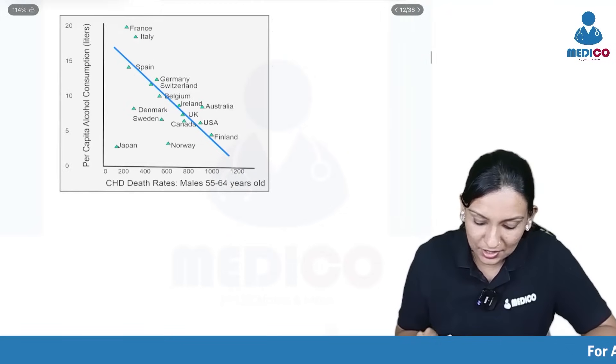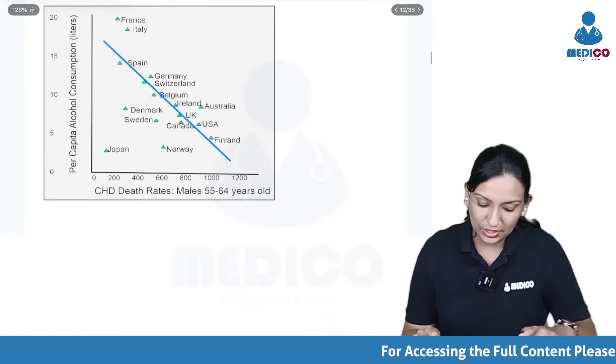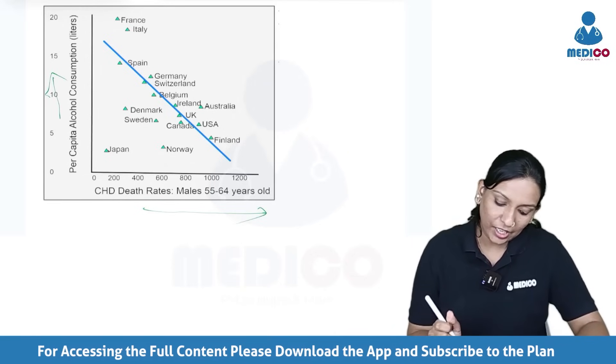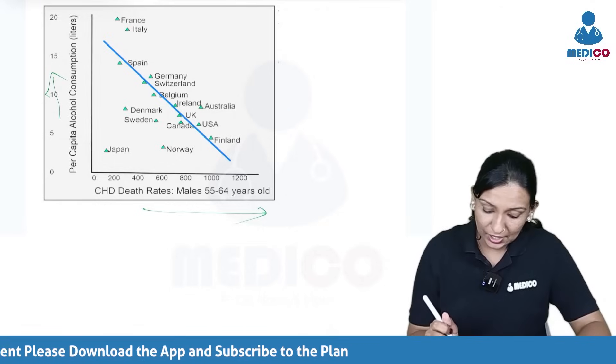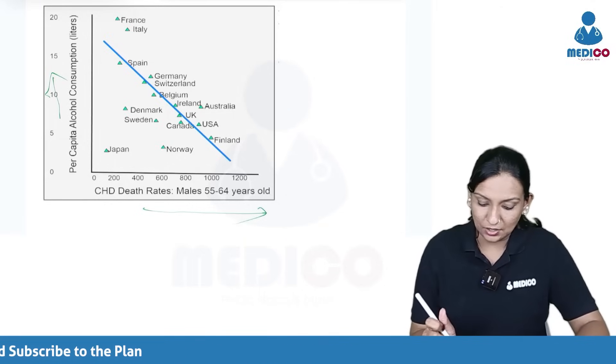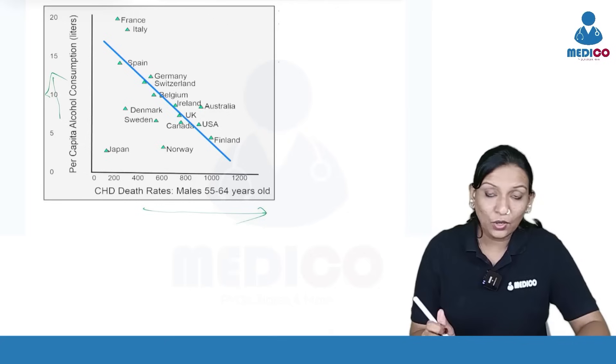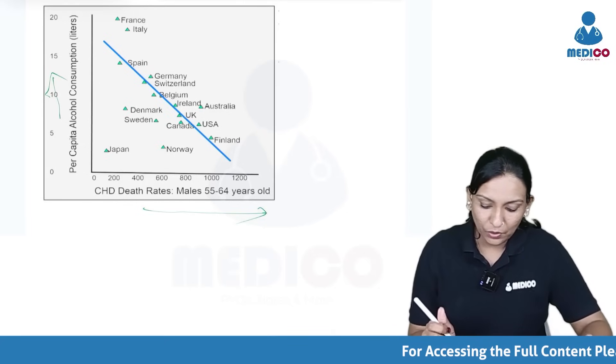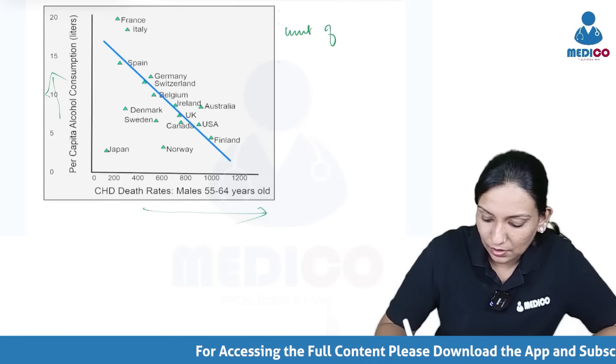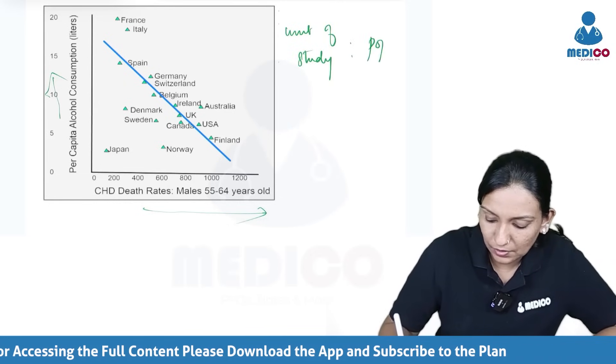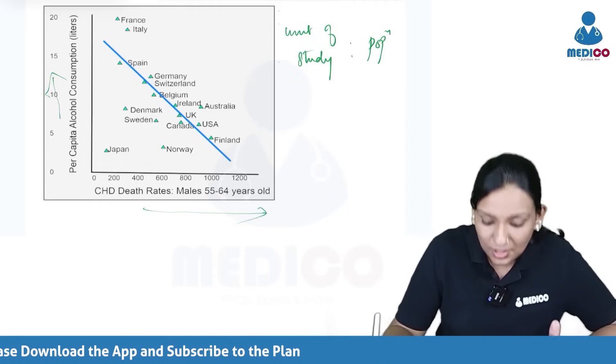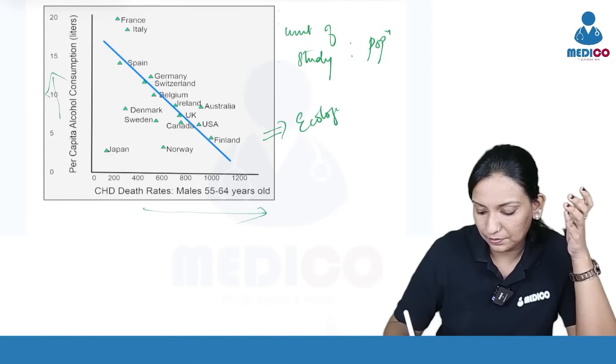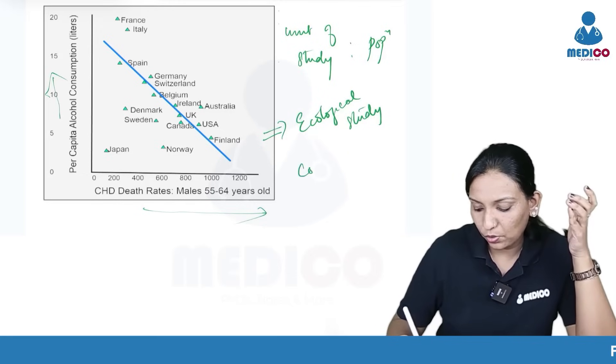This is another study design. You see the x-axis and y-axis. Here in the y-axis, they have the per capita alcohol consumption. And the x-axis, they are showing the death rates due to CHD. And when you see the unit of the study, it is not a person. They have actually quoted countries: France, Italy, Germany, Switzerland. The unit of study is a population. It is not an individual or a patient. This kind of study where the unit of study is a population is called an ecological study. Sometimes it is also called a correlational study.